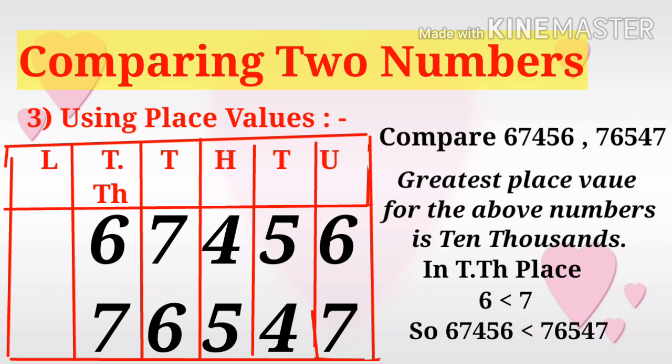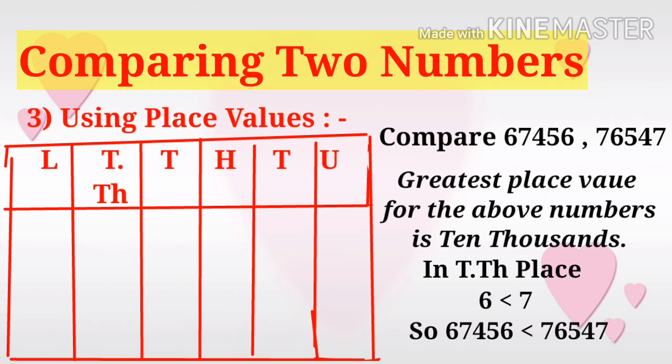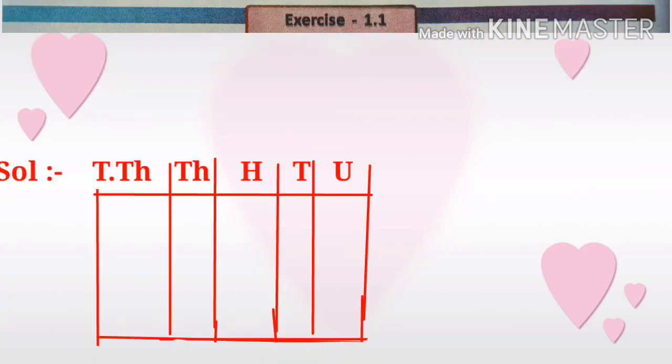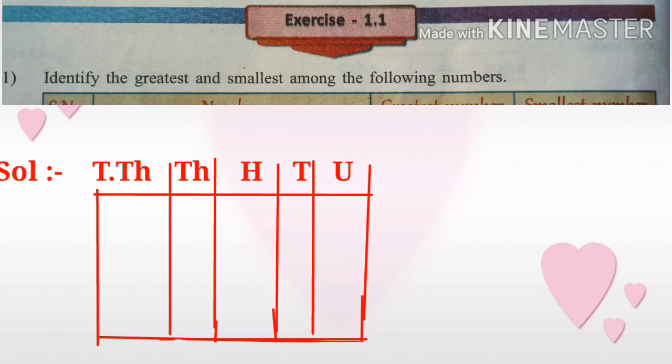In the ten thousands place, the first number has 6 and the second number has 7. Since 6 is less than 7, we can say that the first number is less than the second number — that is, 67,456 is less than 76,154.